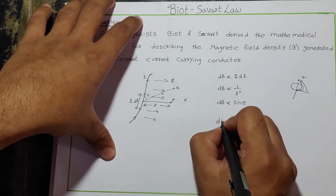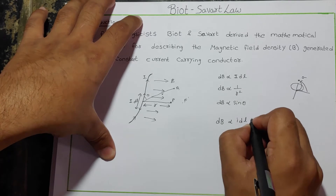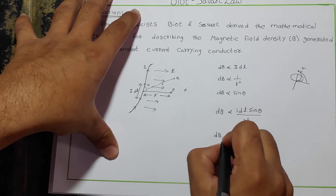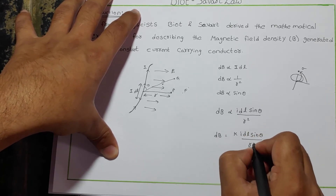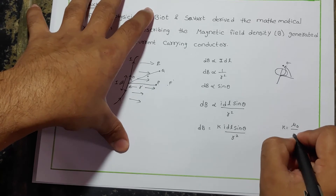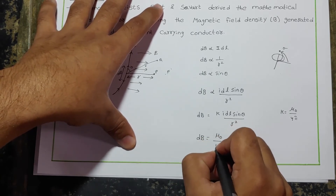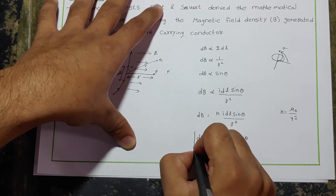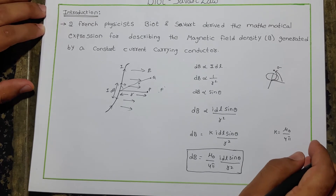From this proportionality we understand that dB is proportional to I·dl·sin(theta) divided by R². Removing the proportionality and placing a constant k, we get dB = k·I·dl·sin(theta)/R². Applying the proportionality constant k = μ₀/4π, we get dB = (μ₀/4π)·(I·dl·sin(theta)/R²). This is the general scalar form of the Biot-Savart law for a current-carrying electric conductor producing magnetic field B.